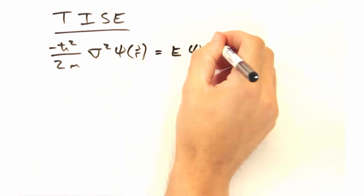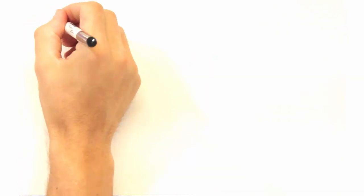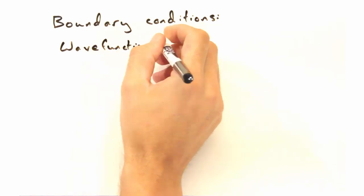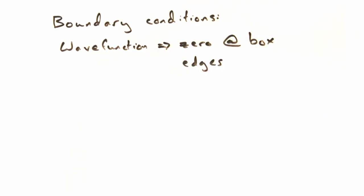Good. So now we have a relatively easy DE that's going to give us a standing wave solution, but what are we missing? Our boundary conditions, right? Indeed. So let's assume that our electron never leaves the box. Then our wave function would be zero at the box edges.